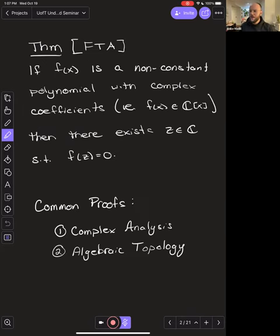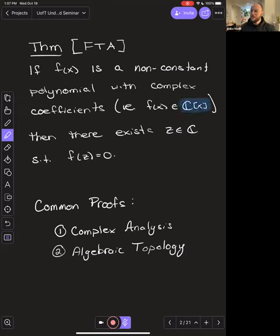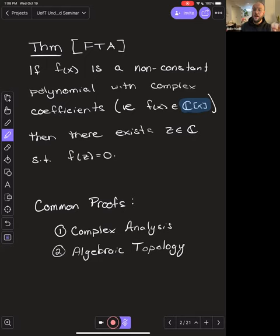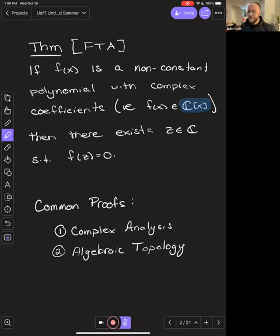First things first — the fundamental theorem of algebra, FTA for short, simply says that a non-constant complex polynomial (a polynomial with complex coefficients) must have a root in C. You can always find a root of a non-constant complex polynomial. C[x] is our notation for polynomials in the indeterminate x with coefficients from C. Every non-constant complex polynomial can be completely factored down into linear terms — these two versions are equivalent, because if you keep finding a root you can drag out a linear term x minus z, over and over, until fully broken down.